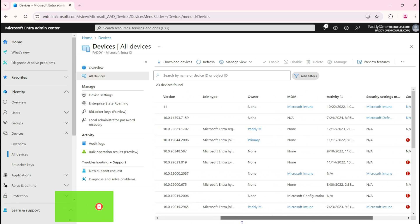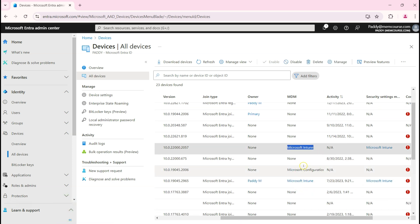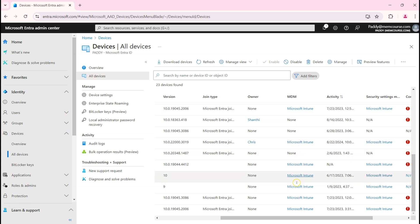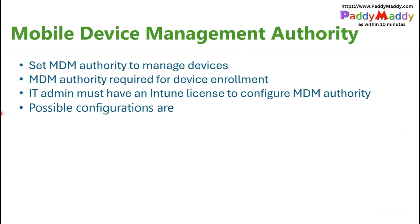Some devices show it configured as Microsoft Intune or ConfigMgr, and sometimes you would also see MDE, which means Microsoft Defender for Endpoint. These are additional MDM authority values you would find in your Entra portal. Also, the admin must have an Intune license to configure the MDM authority — that is a basic requirement.